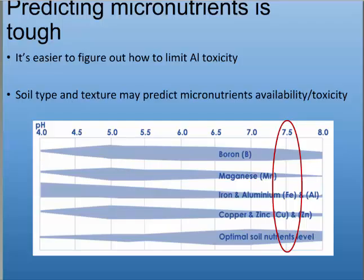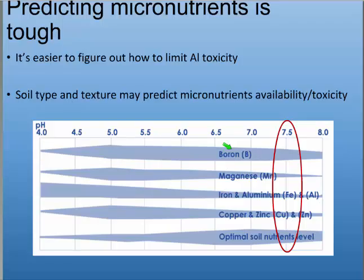Predicting micronutrient availability is tough because it's not just pH that affects them. Just like aluminum can be absorbed by organic matter, so can manganese. Soil wetness and oxidation state can also affect manganese. While pH is a simple way to look at it, in some soils high organic matter or a certain oxidation state can reduce nutrient availability. It's easy to eliminate aluminum toxicity — get above pH 5.5 and aluminum is gone. But between 5.5 and 7, it's much harder to predict what nutrients will be available to your crop.